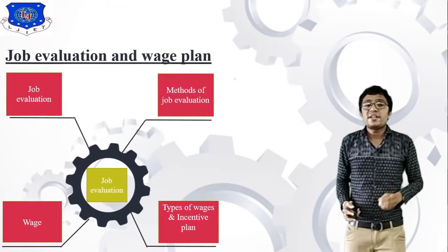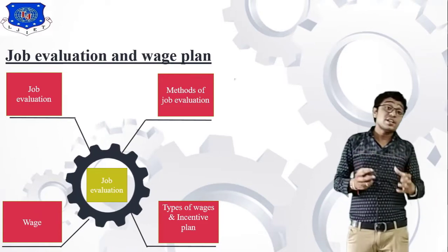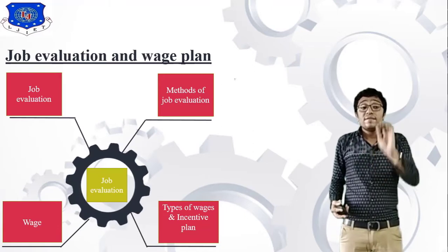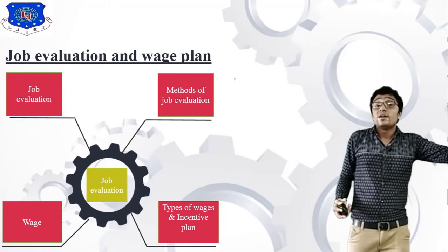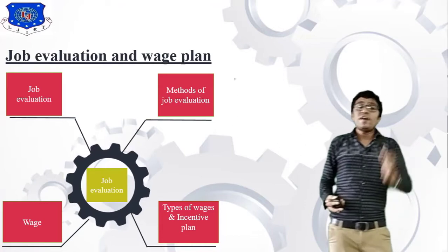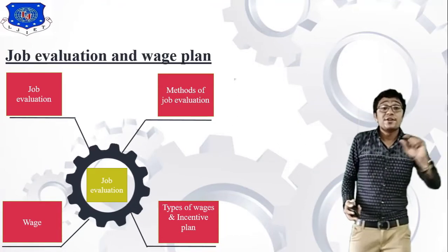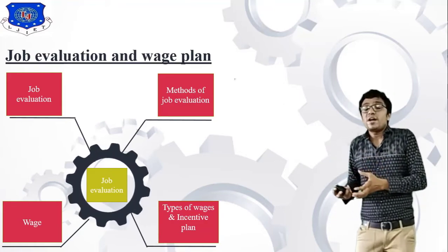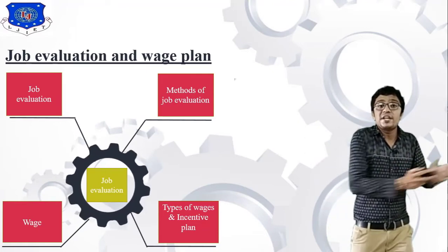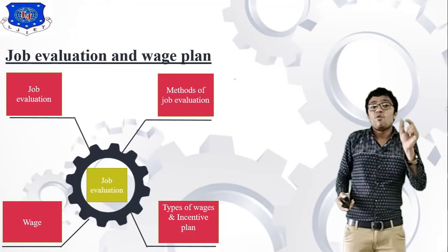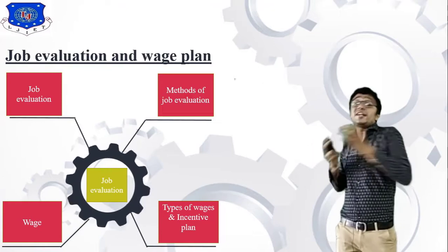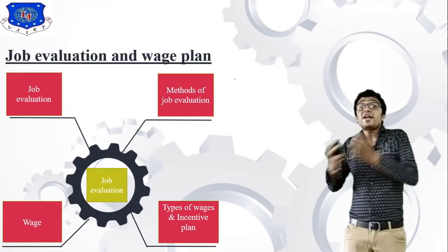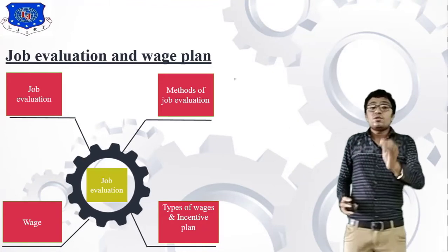The fourth chapter is Job Evaluation and Wage Plan. Job evaluation does not mean quality checking — it is different from QC checking. For example, if you hire one worker, you have to pay a salary according to their profession. That is job evaluation. Wage plan depends on the person's experience. In this chapter we will study different methods of job evaluation, different types of wages, and different types of incentive plans.